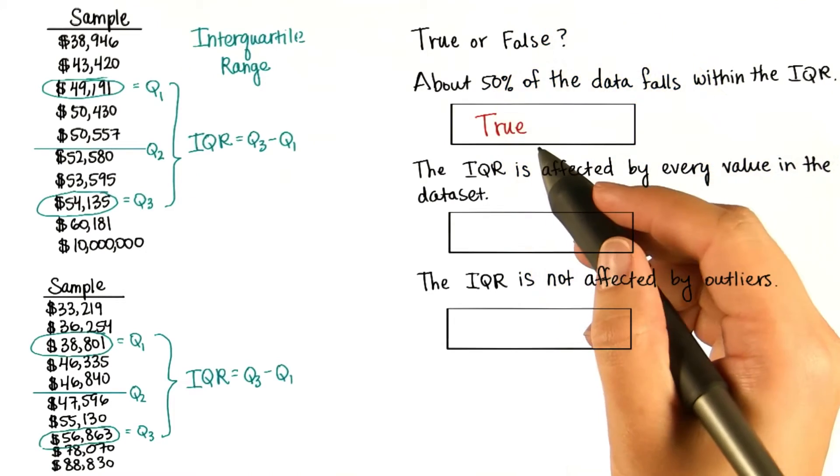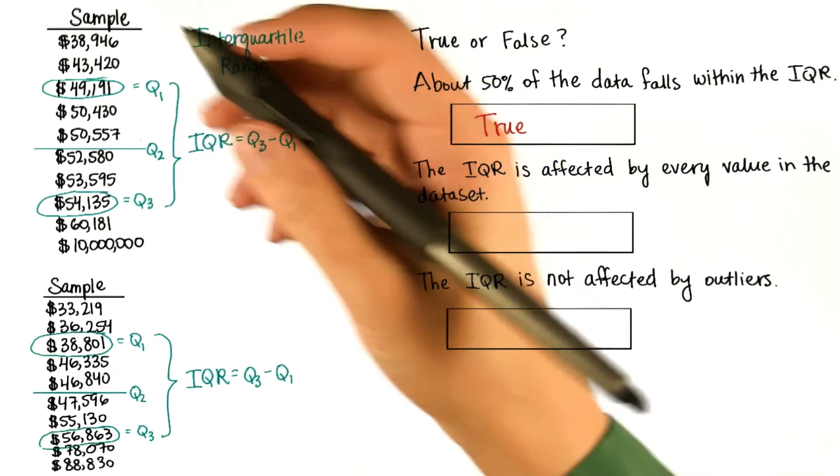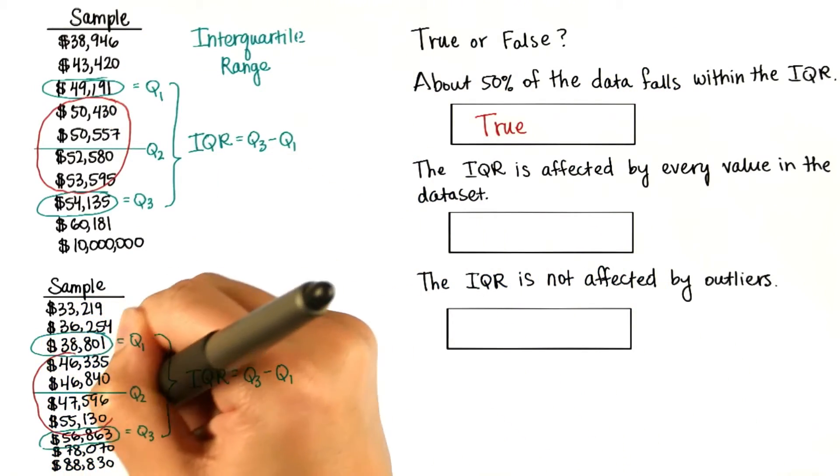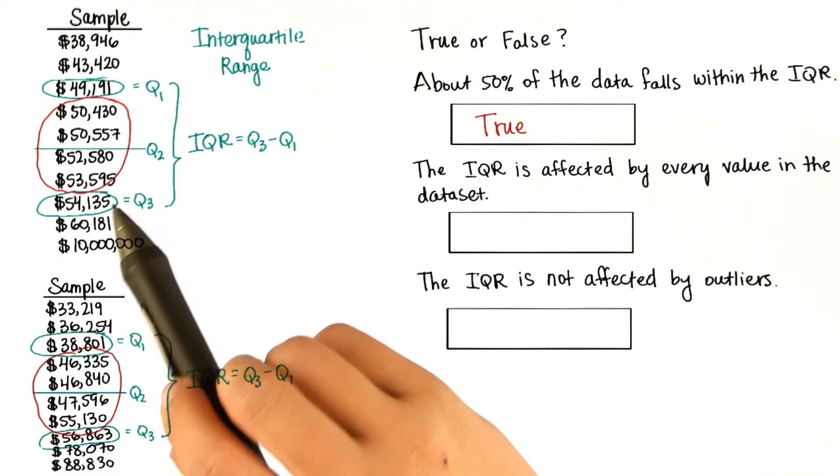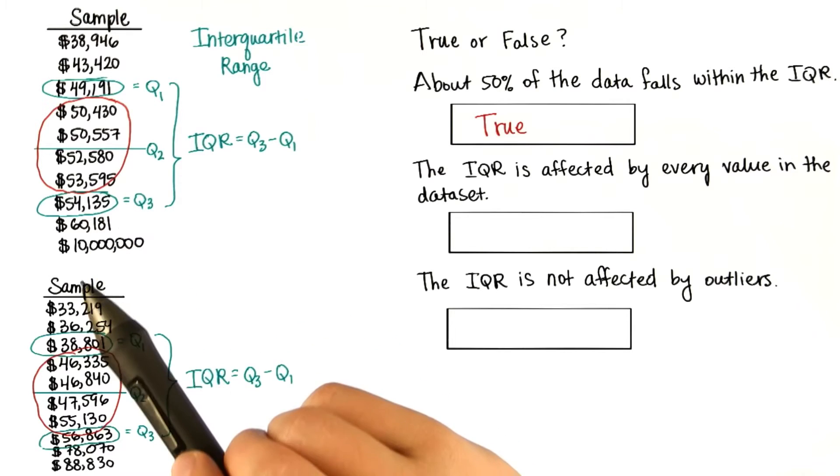This one is true, especially for large data sets. In each of these samples, our sample size is only 10. So here we don't exactly have 50% of the data, but it's pretty close. And this will more and more closely approximate 50% as the data set gets larger.